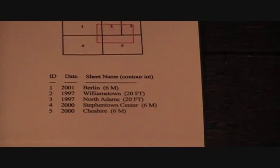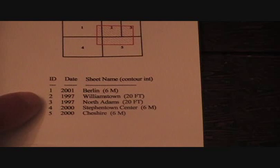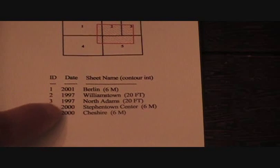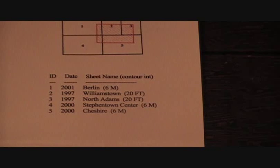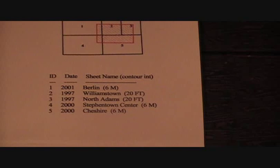Right underneath that — good to know information. The numbers one through five are the map ID numbers, the date that these were taken, and the contour interval, which has to do with the contour lines and the difference in elevation between each. On the top, number one — Berlin — six meters is the difference between each contour line. The next two are 20 feet. I'm no math guru, but I would say six meters is pretty close to 20 feet, so I'm going to call that all the same.